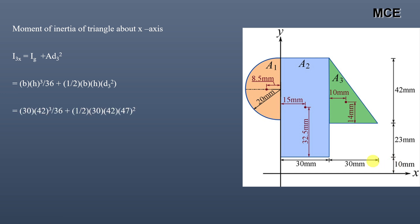Substituting b = 30, h = 42, and d₃ = 14 + 23 + 10 = 47 mm gives the moment of inertia of the triangle about the x-axis as 1.453 × 10⁶ mm⁴.